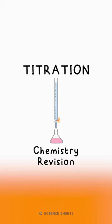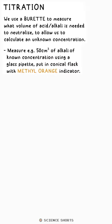Titration. This is how we deduce the concentration of an acid or an alkali. We use a glass pipette to measure out a known volume of alkali and put it in a conical flask with a few drops of methyl orange.